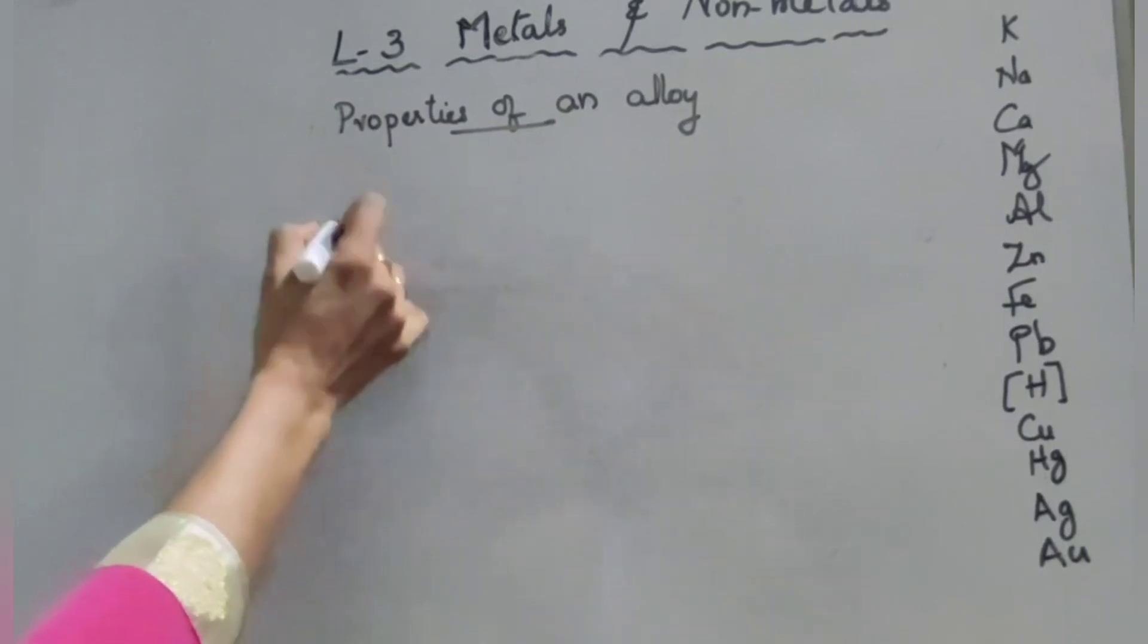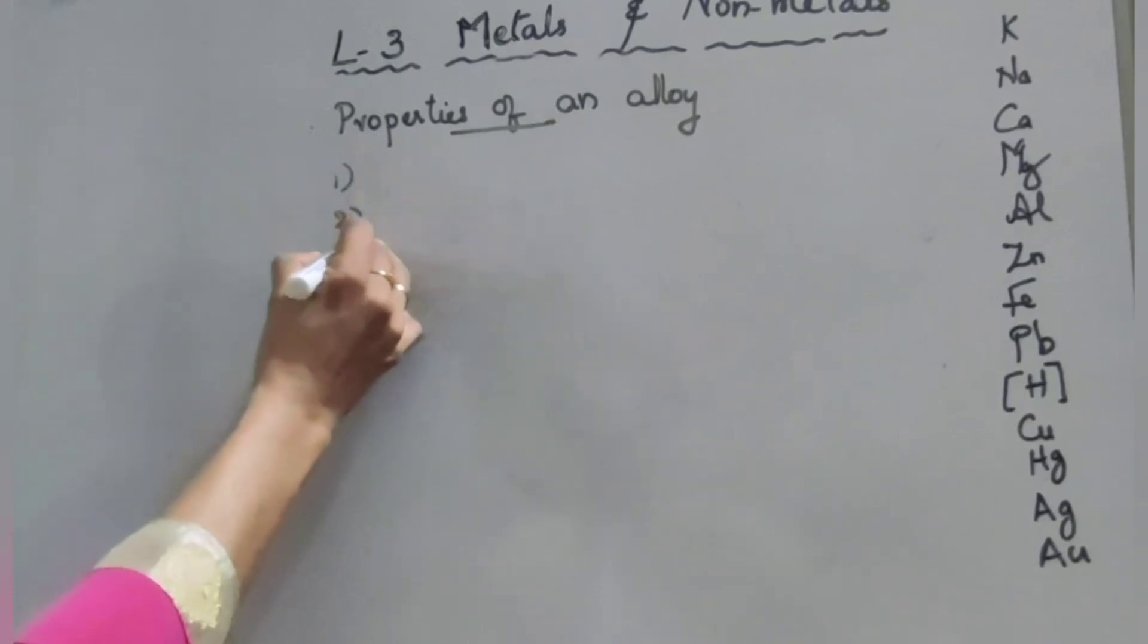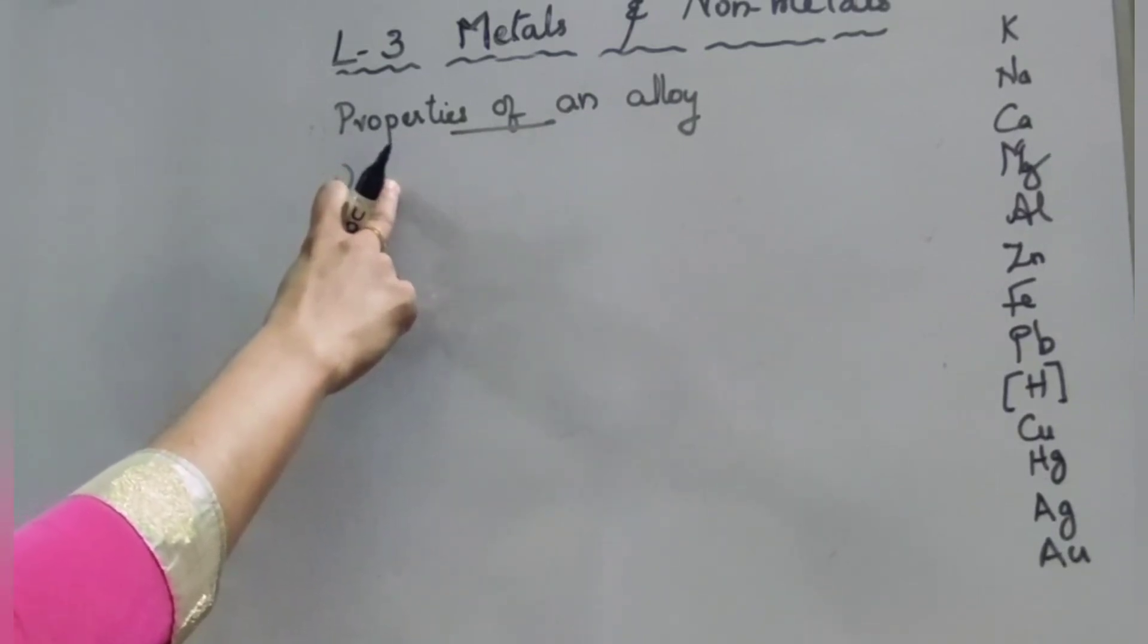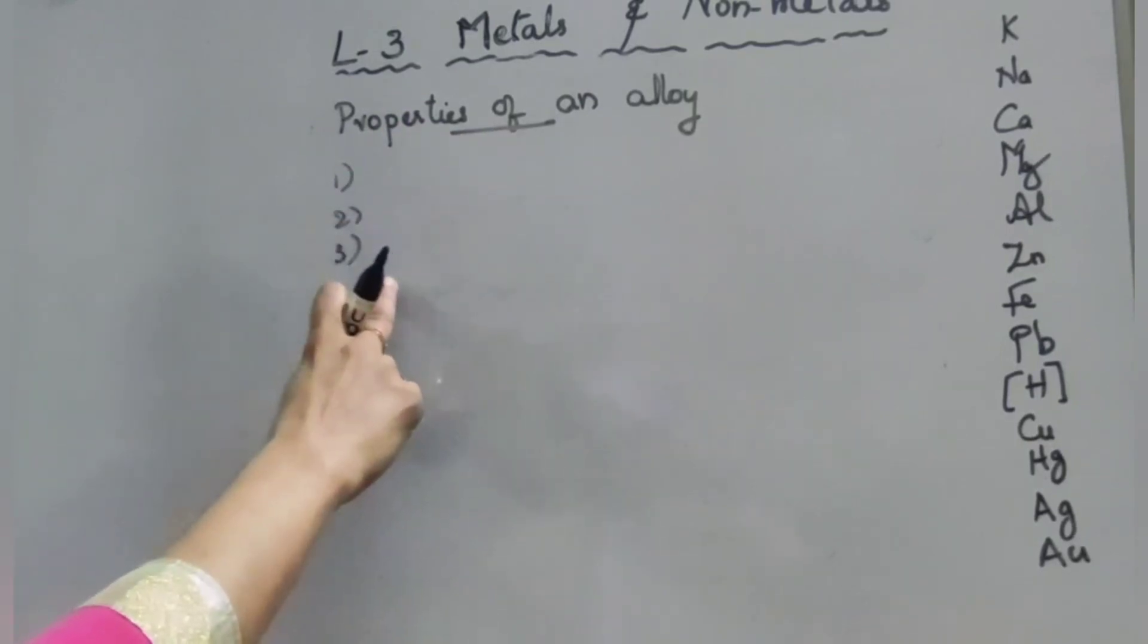Second, it is more resistant to corrosion. Third point, the melting point of alloy is lower than the constituent metals. Once again I will repeat: alloys are stronger than metal from which they are obtained, second, more resistant to corrosion, third, melting point of alloys is lower than this metal.